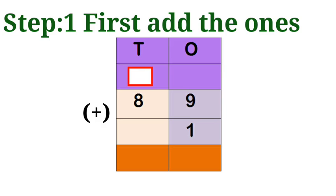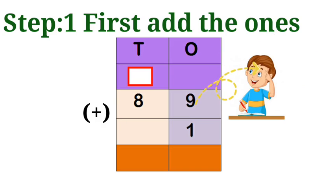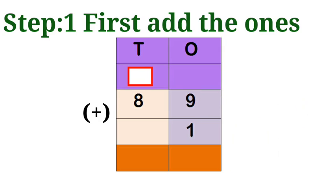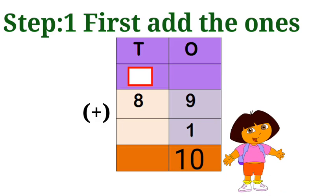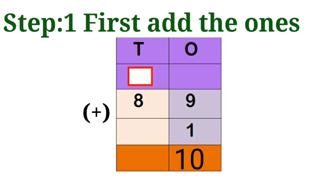Next see the sum. First we add the ones again. Nine in the mind, one in the finger. Nine after adding plus one, what is the answer? Ten. The answer is ten. Ten is a two-digit number.